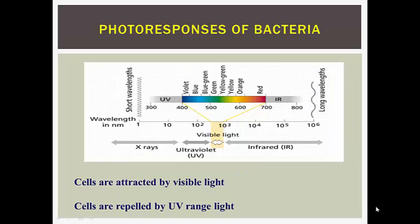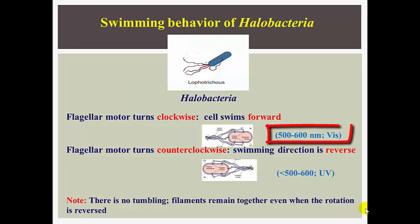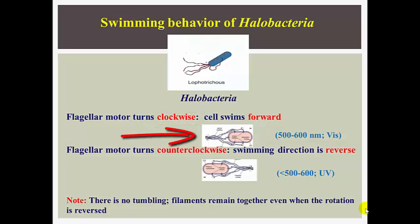Bacterial cells are capable of positive and negative photoresponses. Positive phototaxis is movement towards light while negative phototaxis is movement away from light. Cells are attracted by visible light and repelled by UV light. Halobacteria are halophilic archaea that grow in the presence of high salt concentration and are lophotrichously flagellated cells, meaning flagellar filaments are on one side of the cell. When the cell senses visible light, the flagellar motor turns clockwise and the cell swims forward. When the cell senses UV light, the flagellar motor turns counterclockwise and the cell swims in the reverse direction.